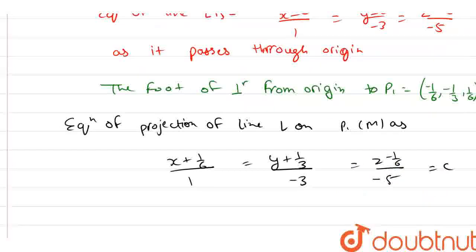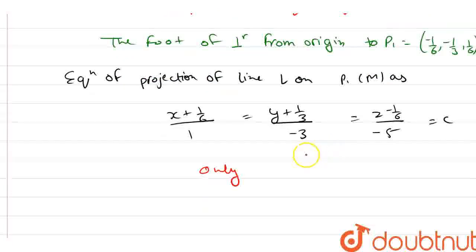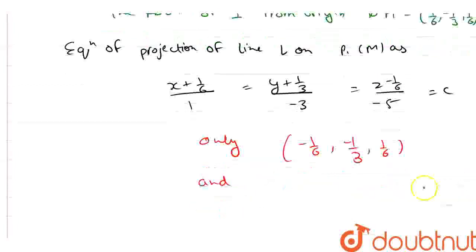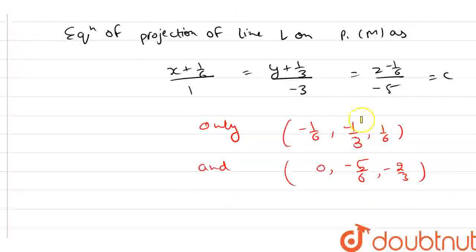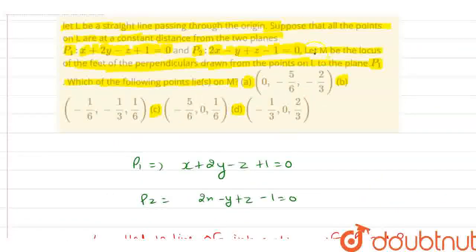Now checking the given options against the equation of the locus M, only the points (-1/6, -1/3, 1/6) and (0, -5/6, -2/3) satisfy the equation of the line. Therefore these two points are our final answer. Looking at the options, option A and option B are the correct answers. Thank you.